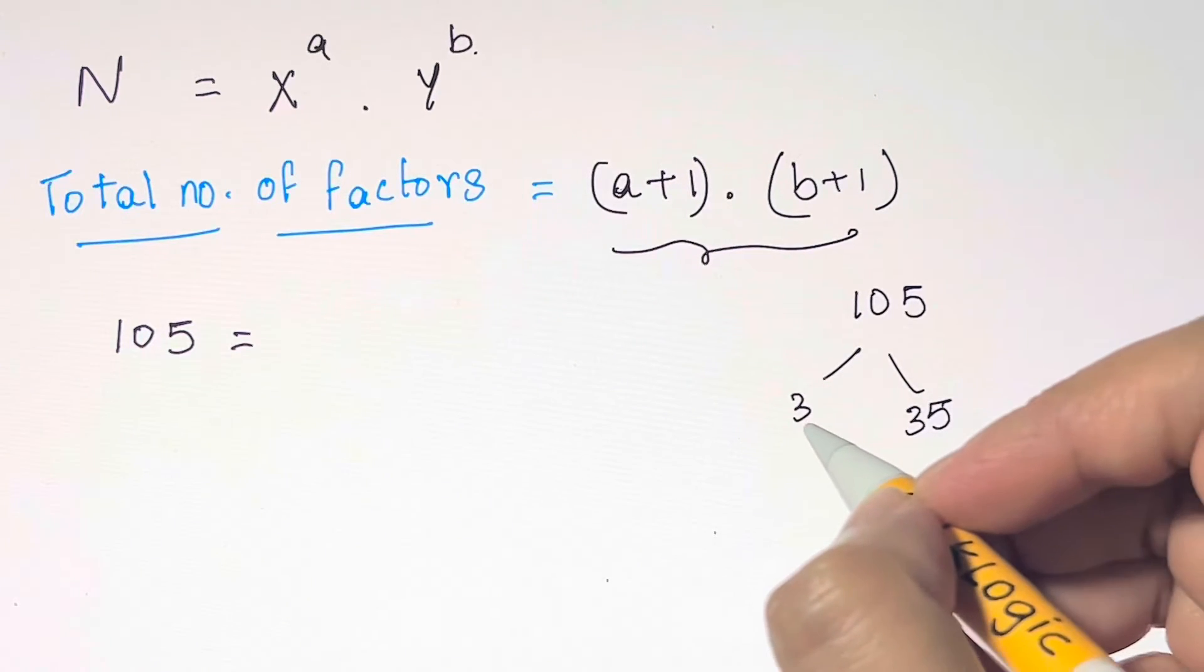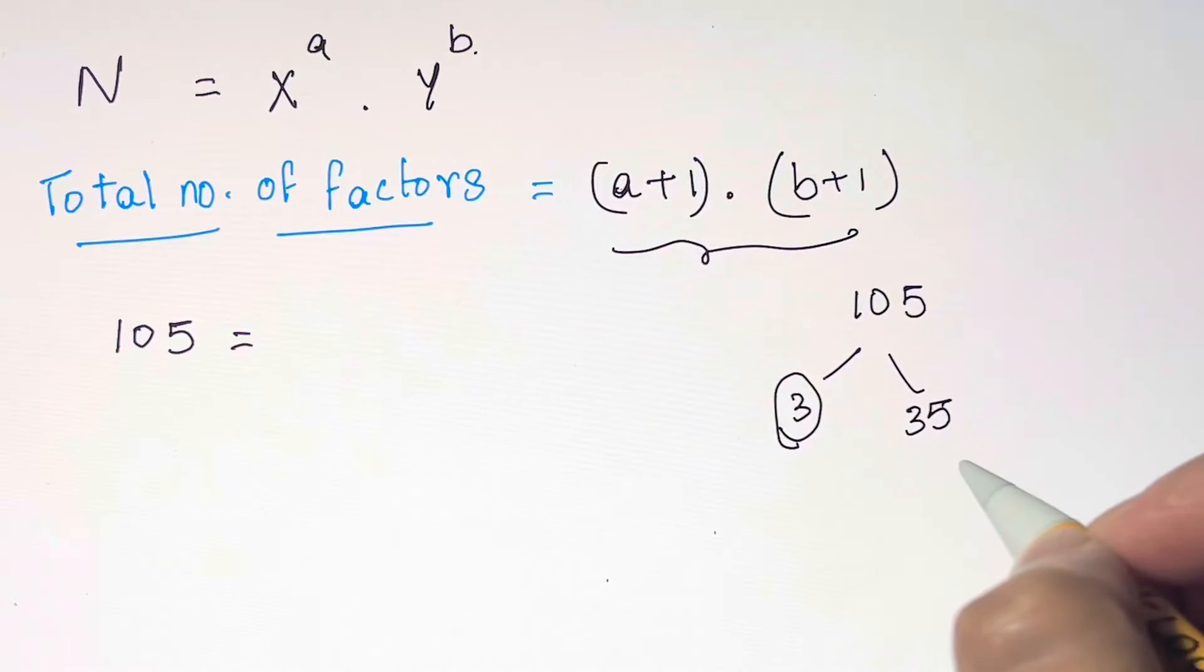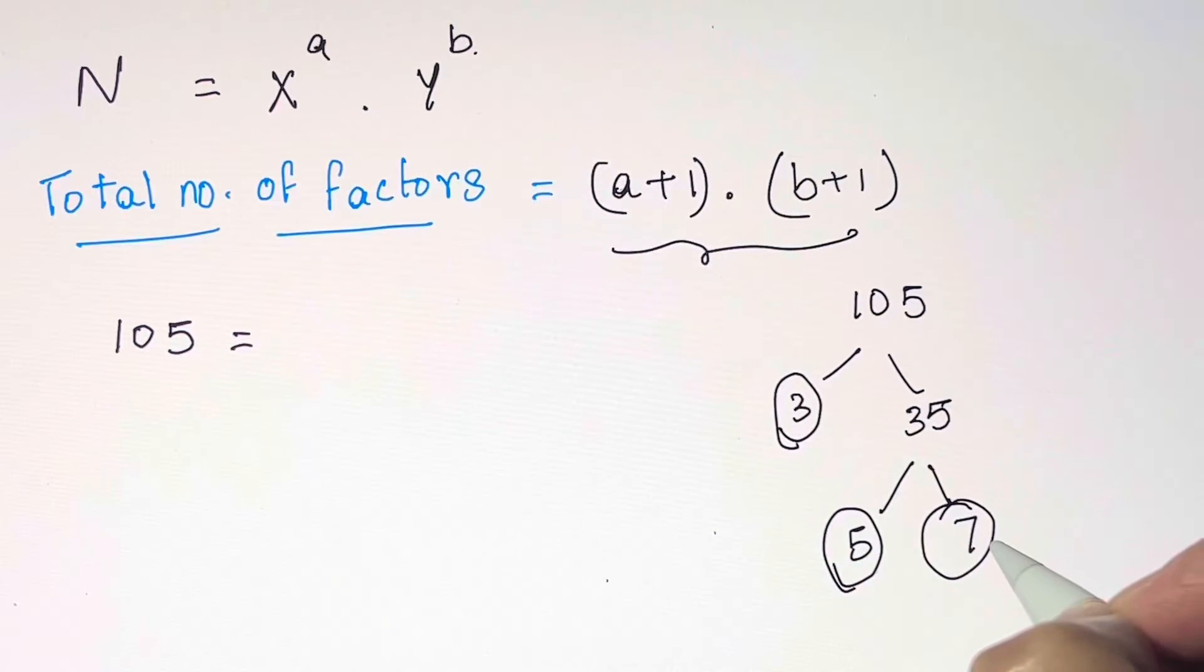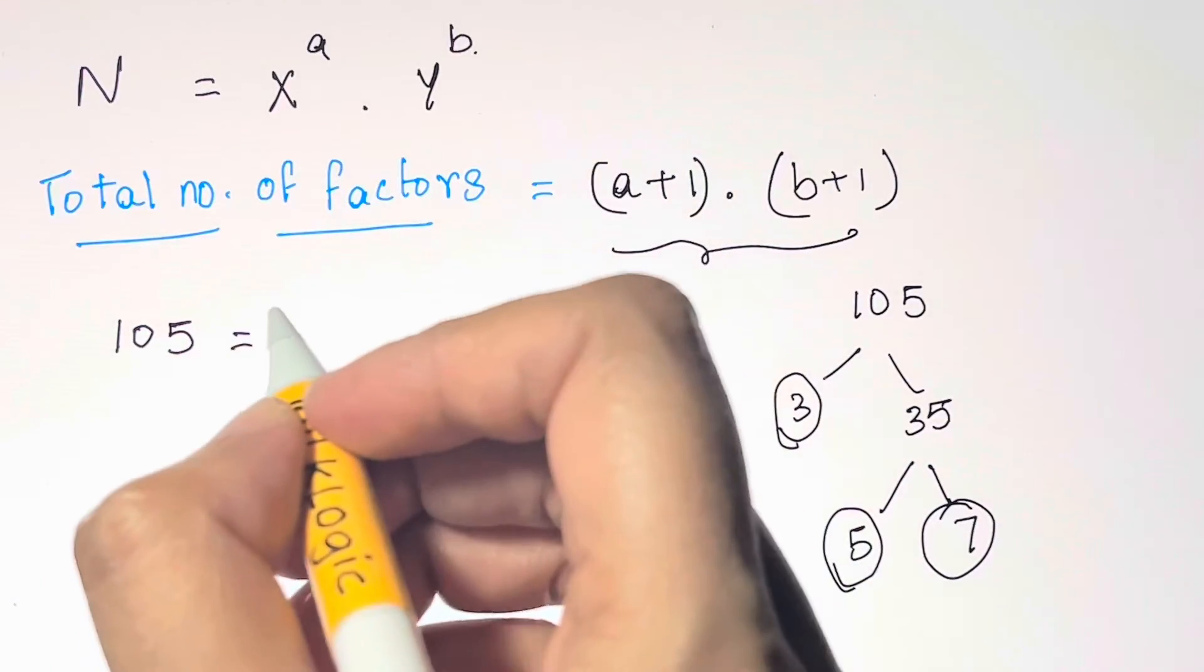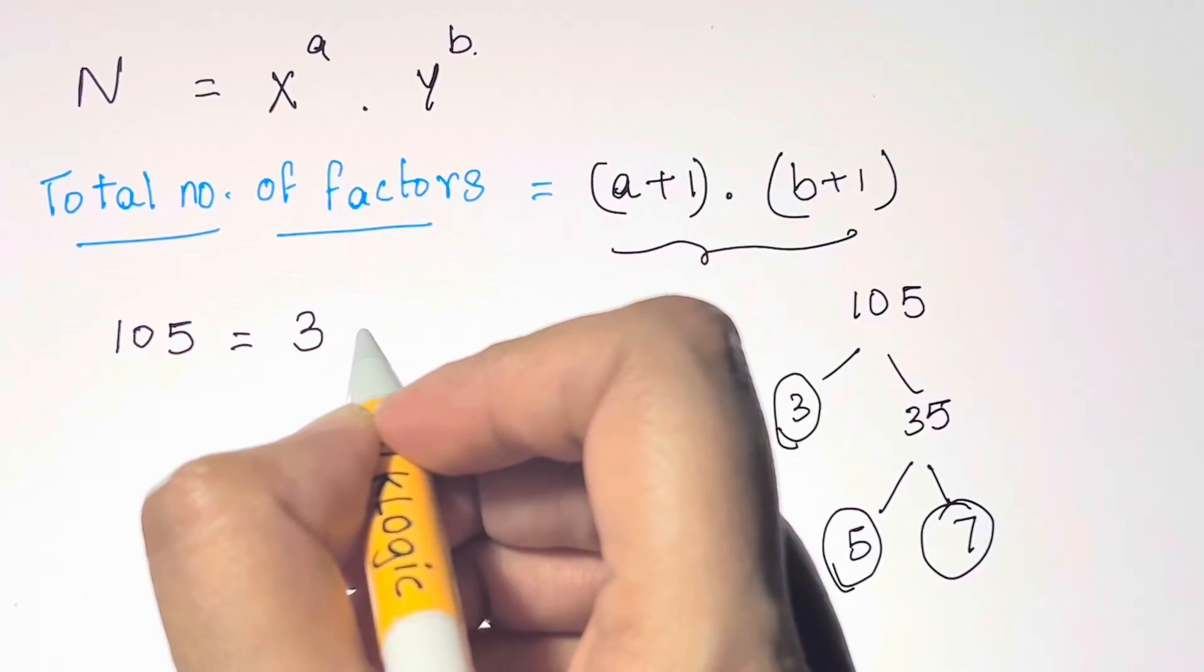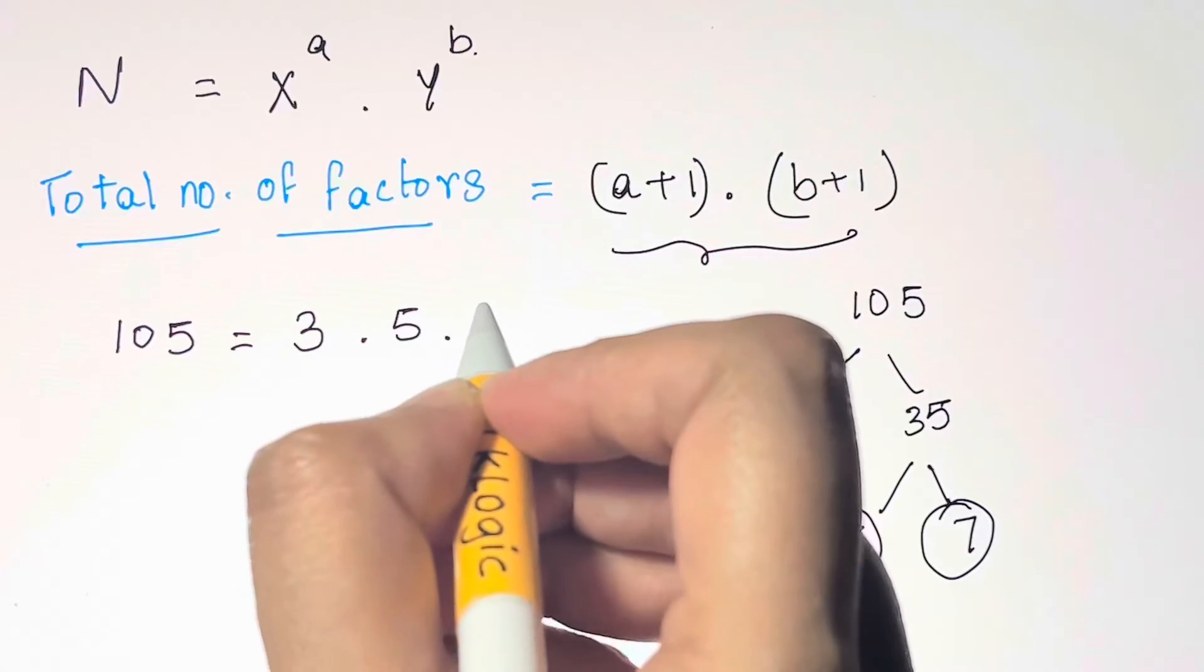So here we got a prime number 3. Now 35 is a composite number. We can again find a pair of numbers which multiply to give us 35. That will be 5 times 7. We know that 5 is a prime number, 7 is a prime number, they cannot be broken down again. So we have got the product of prime numbers: 3 times 5 times 7.